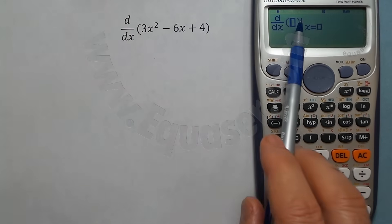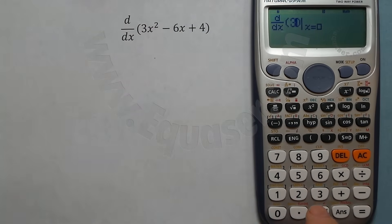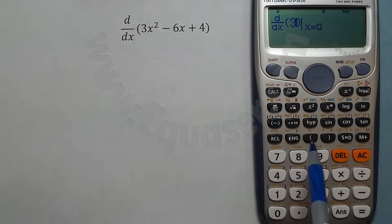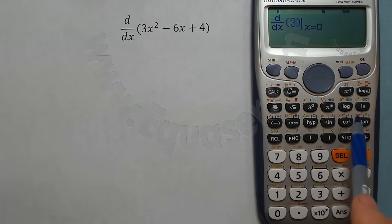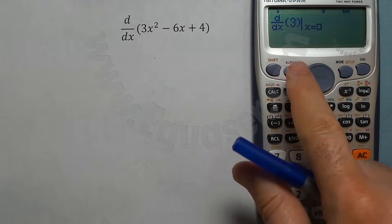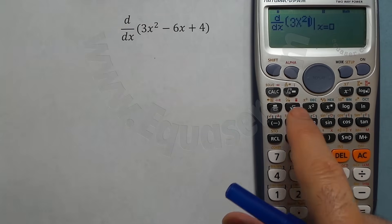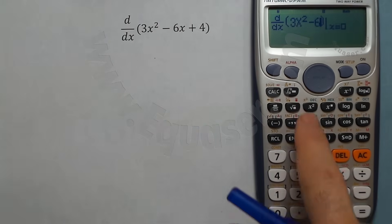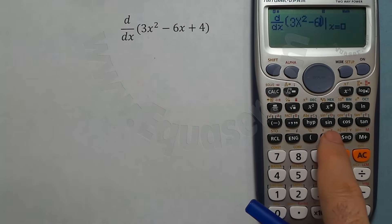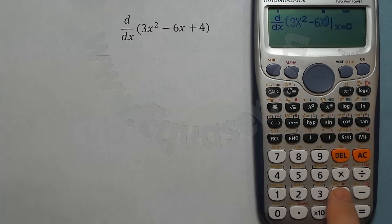So let's enter this function here. Three, in order to enter x, x is red. All these red are accessed with alpha, plus alpha and x, and then press square so make it square, minus six x, minus six and then alpha and again x plus.